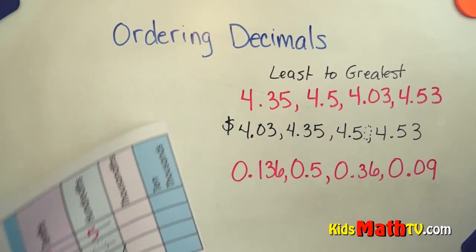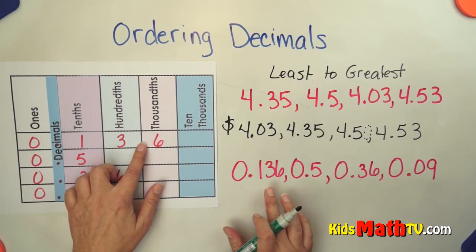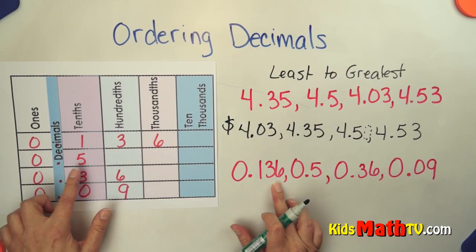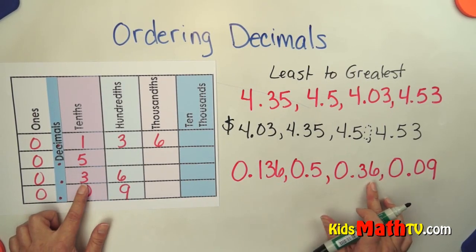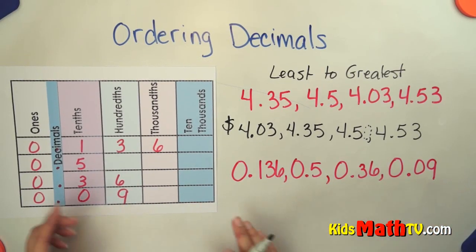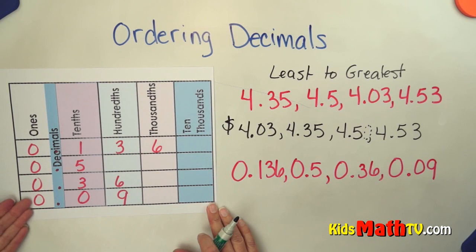Okay, here's another set of numbers. We have zero and one hundred thirty-six thousandths. We have five tenths, thirty-six hundredths, and nine hundredths. So the same process. We'll start in the ones place. All of them are zeros. So we'll go to our tenths place.